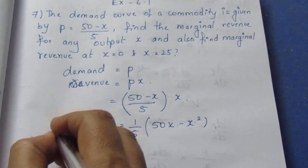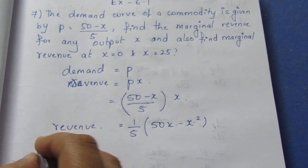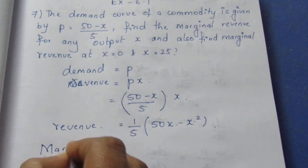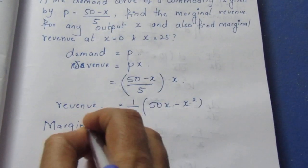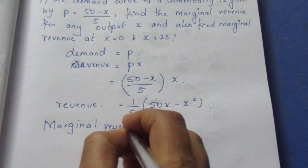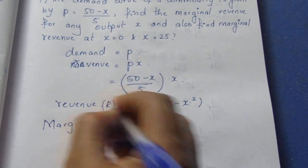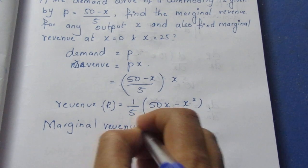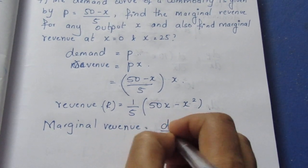So this is our revenue. Now we find marginal revenue. The formula for marginal revenue is MR equals d by dx of R.